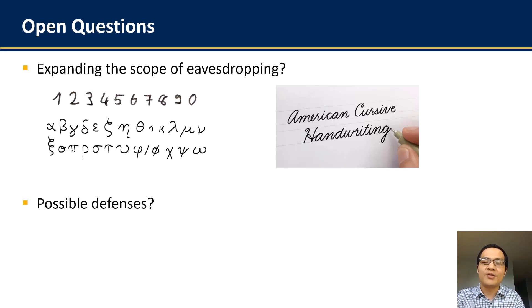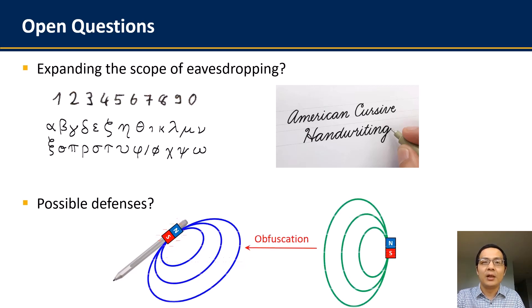Also, we have been thinking about how this attack could be practically defended in practice. The most effective defense, of course, is to apply magnetic shielding on the stylus pens, but this may be practically expensive or increase the pen's weight. Another way is to obfuscate the magnetic field produced by the magnet with another external source, but this may add extra cost to the mobile device. So this would be also an interesting research question that we would like to further explore.